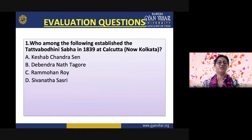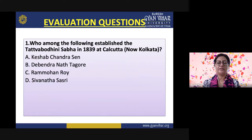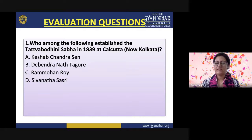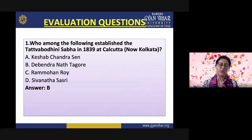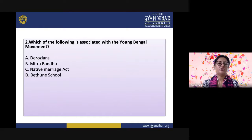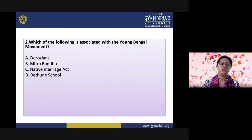Now we will move on to the evaluation questions. Question 1: Who among the following established the Tatva Bodhini Sabha in 1839 in Calcutta? Options are: Keshav Chandrasen, Devendra Nath Tagore, Ram Mohan Roy, or Shivanath Shastri. The correct answer is Devendra Nath Tagore, option B. He was associated with the Brahma Samaj of Raja Ram Mohan Roy but later founded the Tatva Bodhini Sabha in 1839 with his own thoughts. Question 2: Which of the following is associated with the Young Bengal Movement? Options are: Derosians, Mitra Bandhu, Native Marriage Act, or Bethune School. The correct answer is Derosians.